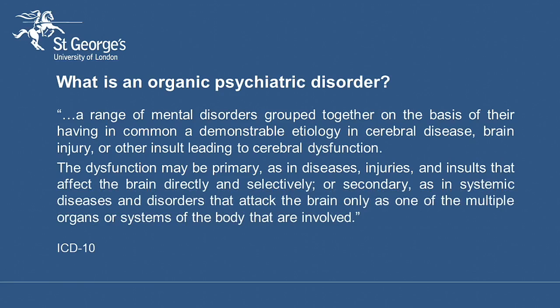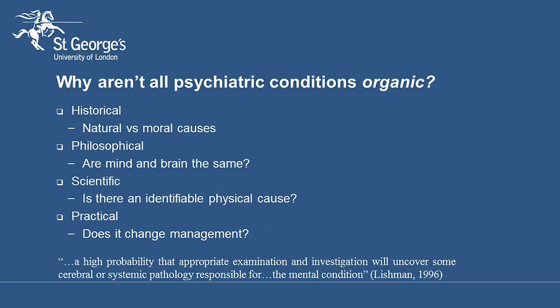So let's now consider why aren't all psychiatric conditions considered organic. The background to this is a large amount of time and money that has been put into searching for physical mechanisms behind the functional conditions — an example is the search for genetic linkages or brain scan correlates with schizophrenia. I would say that there are four aspects to this question. The first is historical. For a long time doctors have considered there were two main types of causes for psychiatric conditions: natural and moral, and in modern day language we might say this is medical versus the psychological and social causes.